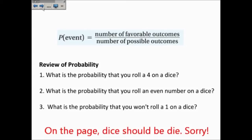For example, what is the probability that you'll roll a 4 on a dice? Well, how many 4s are there on a dice? There's one 4 on a dice out of how many sides are on the dice, there are 6. So the probability of rolling a 4 is 1 sixth.